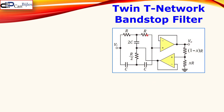The circuit is shown here. You see the T network and another T network, where this resistor is twice the value of the other resistors, and this capacitor is also double the other two capacitors. We also have two operational amplifiers in the unity gain feedback configuration functioning as voltage buffers. In addition, we have a voltage divider using two resistors and the parameter x, the details of which will be discussed shortly.